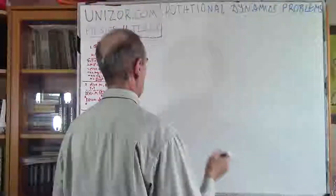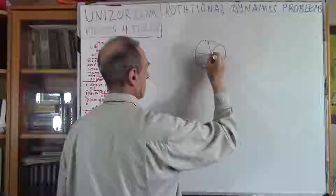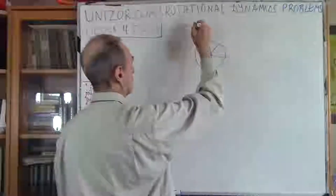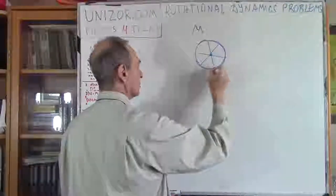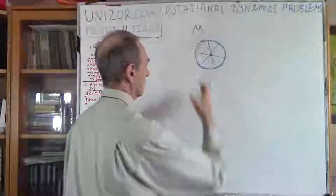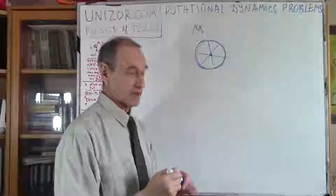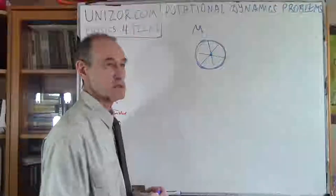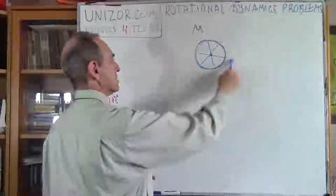Problem number one. Let's assume that we have a wheel on an axis. It can freely rotate. It has certain mass M, but what's interesting is the mass is concentrated only in the rim. So let's consider that the rim is very thin, but it contains all the mass of the wheel. For instance, a bicycle wheel more or less corresponds to this reality. The spokes connecting the wheel are very light, so we assume the whole mass is only in the rim.